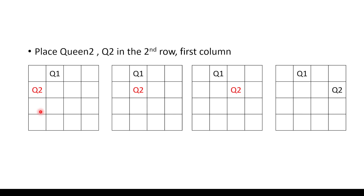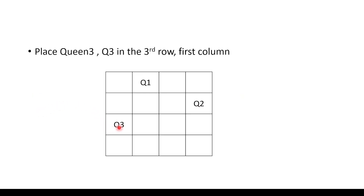Now we look for a position for Q3 in the third row. Placing Q3 in the first column satisfies all constraints: all three queens are in different rows, different columns, and no two are on the same diagonal. This is a valid position for Q3.